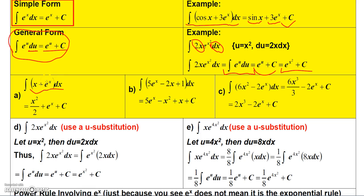Here are some simple form examples. To integrate x + e^x dx: integrate x using the power rule to get x²/2, and integrate e^x to get e^x. For 5e^x - 2x + 1: integrate to get 5e^x minus x squared plus x plus a constant.